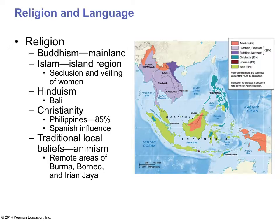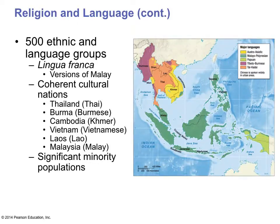Religious and linguistic diversity is very important here. In the mainland area there is a high degree of Buddhism. In the islands of Indonesia, there is a high degree of Islam — Indonesia is actually the largest Islamic country in the world. There are elements of Hinduism on the island of Bali. Christianity is very strong in the Philippines, estimated at about 85%, due to Spanish influence. There are over 500 ethnic and language groups across Thailand, Burma, Cambodia, Vietnam, Laos, and Malaysia. There are some minority populations in conflict, with the Chinese in particular trying to influence this part of the world, causing pushback from Southeast Asians.